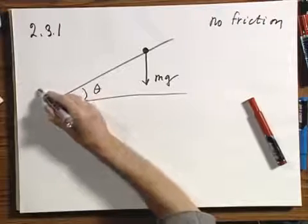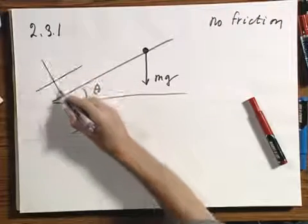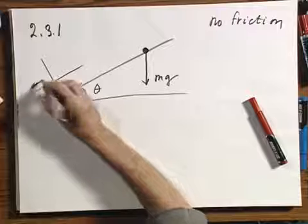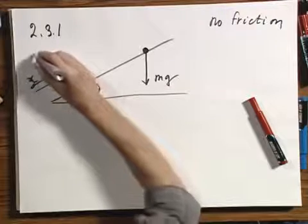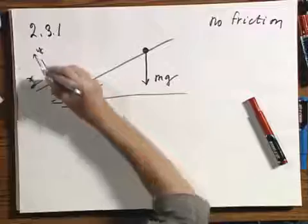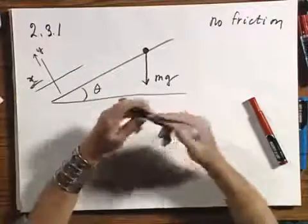When I have inclines, I always separate into an x direction along the incline and a y direction perpendicular to the incline. The reason I do that is that I know in the direction perpendicular to the incline there is no acceleration — the object is not taking off from the incline and not pushing through it. So the acceleration and therefore the net force perpendicular to the incline must be zero, and all you have to deal with is the acceleration along the incline.